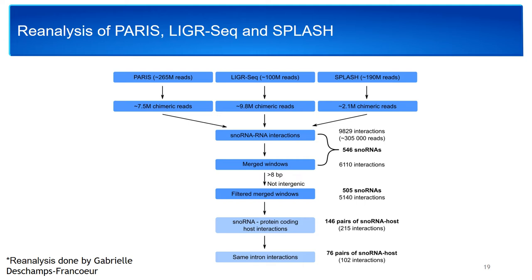From the snoRNA-RNA interaction network, I noticed that almost a third of the snoRNAs were interacting with their host transcripts, and that half of the snoRNAs were interacting within the same intron where the snoRNA is located — a feature similar to SNORD86 that I showed previously. Based on that, my hypothesis was that more snoRNAs are able to influence the alternative splicing and expression of their host gene.